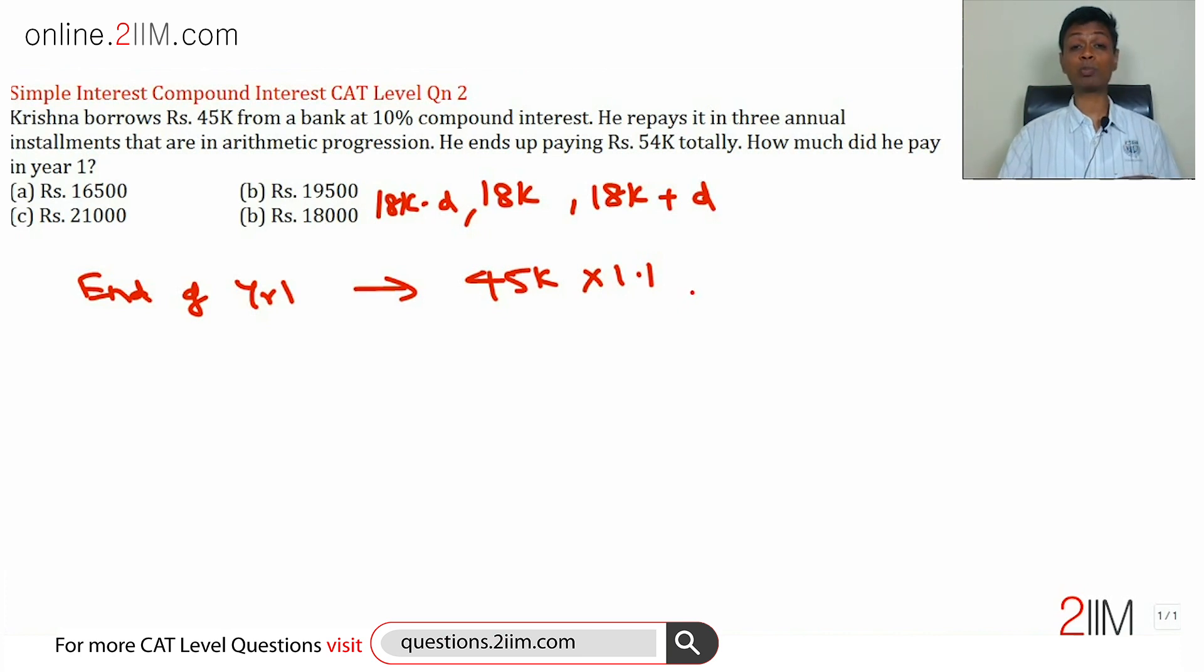If he chose to pay all of that at the end of year one to clear his entire debt, he would have paid this much amount, which is 45,000 plus 4,500, which is 49.5k. Instead of thousands, I'm putting it as k.